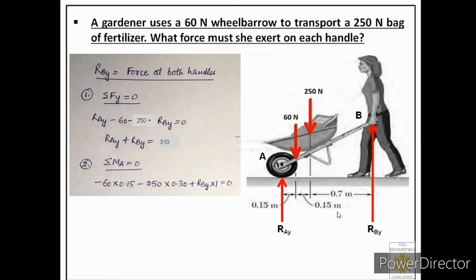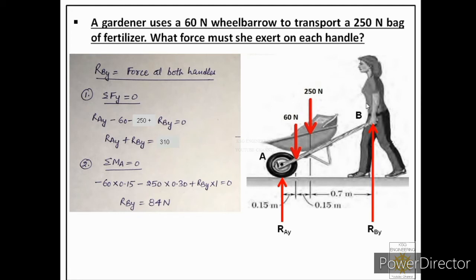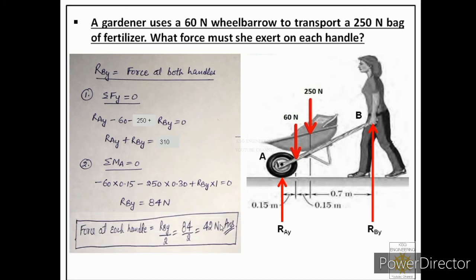The moment equation is: −60 × 0.15 − 250 × 0.3 + RBY × 1 = 0. This has only one unknown, so we solve it: RBY = 84 N. Since this is the reaction for both handles combined, we divide by 2 to get the force on each handle, which is 42 N. Let us solve one more numerical.